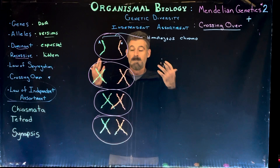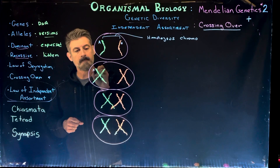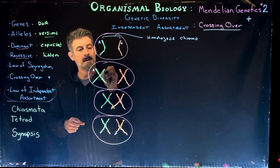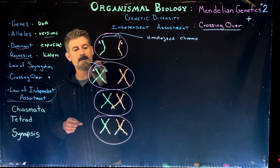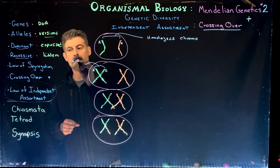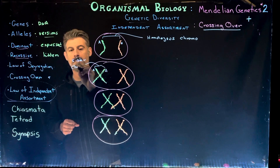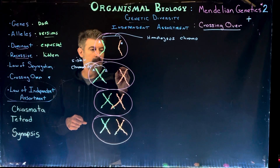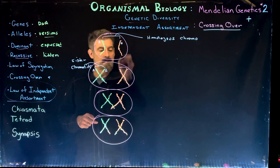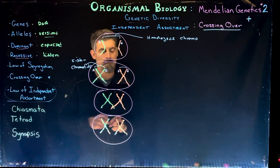DNA replication occurs. They double up and now you have your sister chromatids. The same happens over here — these are sister chromatids, doubling up, so A and A like that.